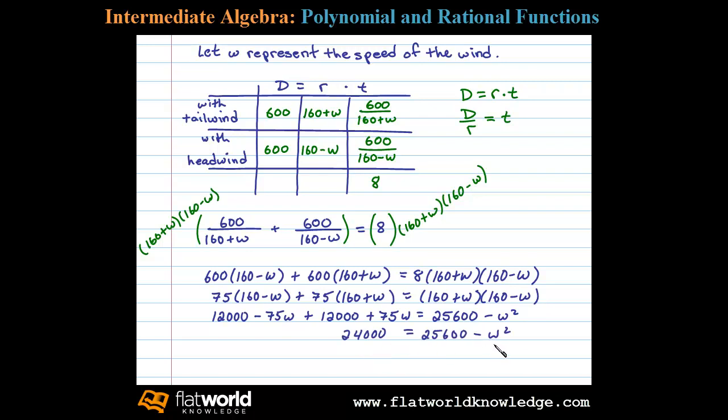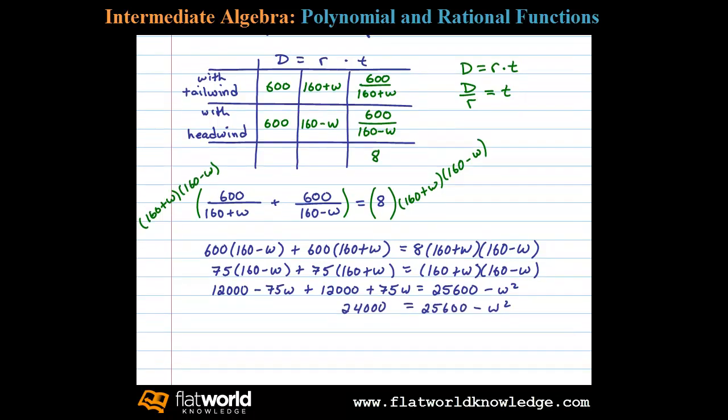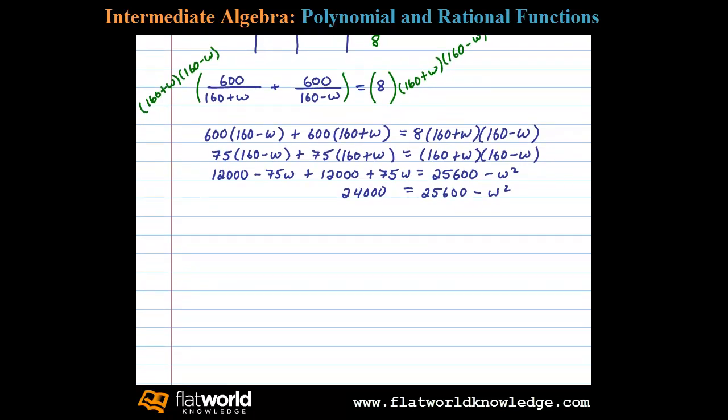Now at this point, we can see that we can solve for W by extracting the square root. Let's subtract 25,600 on both sides, and then multiply both sides by negative 1. And we can see at this point, we can take the square root of both sides or apply the square root property. In that case, we'll get plus or minus 40 equals W.